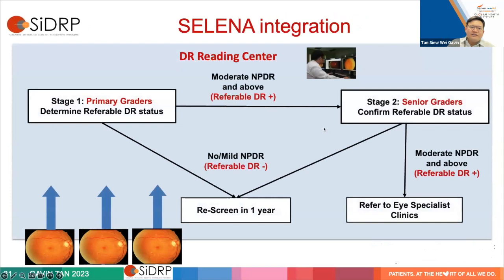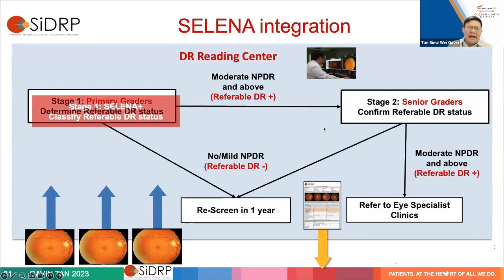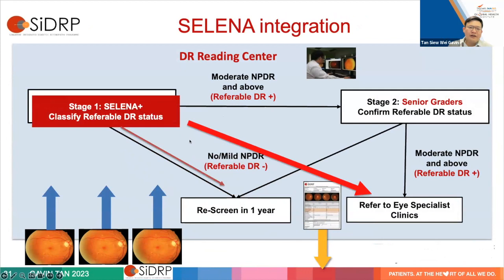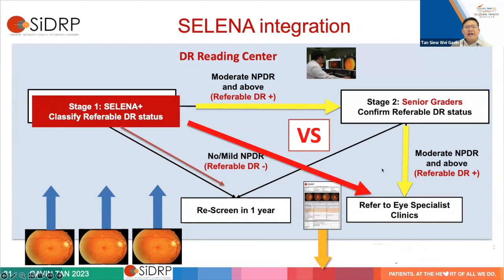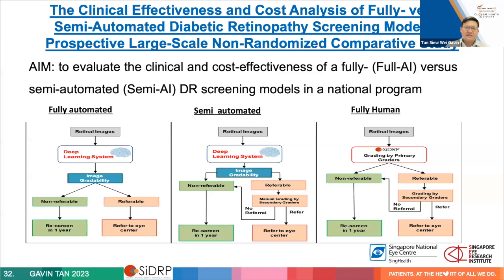In our initial implementation, we wanted to evaluate how effective the AI was in a real-world study and decide which implementation model was best. You can use AI in many forms: fully autonomous with no human in the loop, or as a physician/human assistant where humans review every image. We decided on a hybrid model where AI acts as the first stage and human graders arbitrate only the abnormals, with audits on normals to ensure quality of care was not compromised.